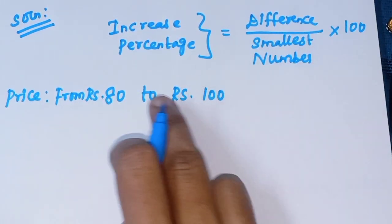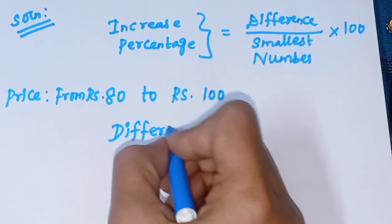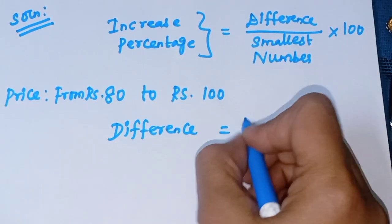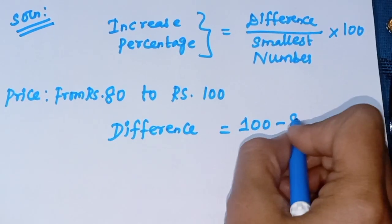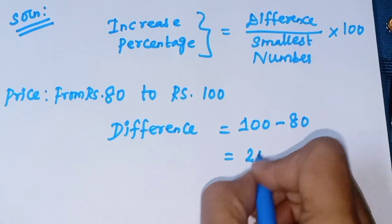Difference: 100 minus 80 equals 20. The difference is 20.